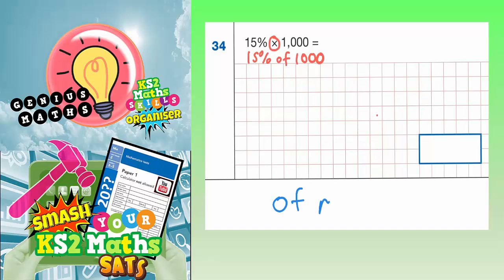'Of' means 'times'. They both mean the same thing. So to get 15%, the easiest way of doing it is to get 10% first.